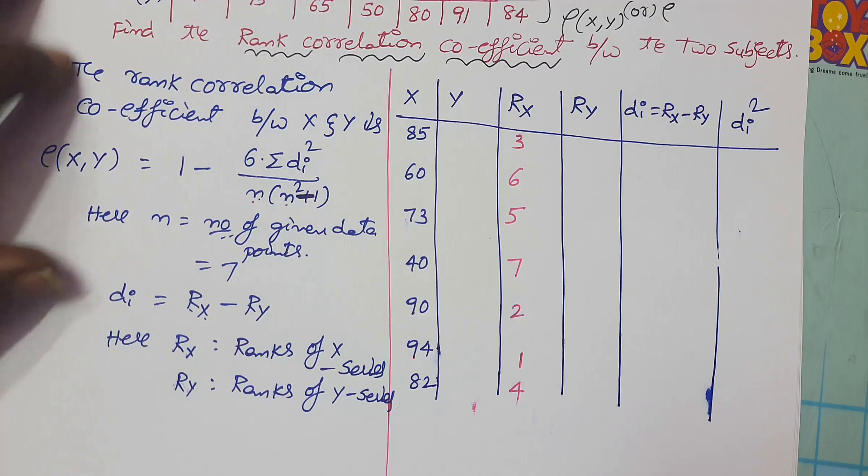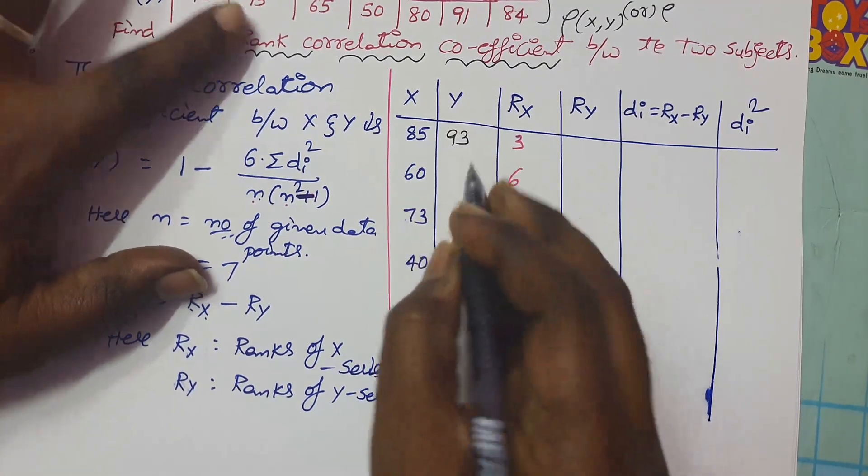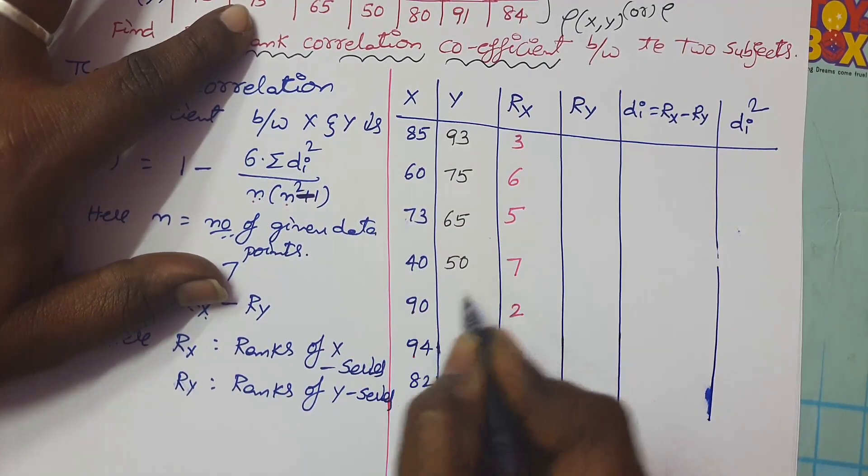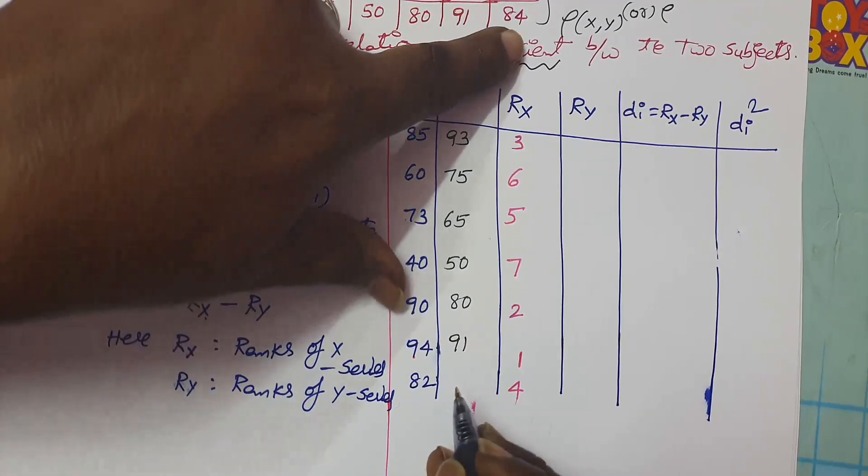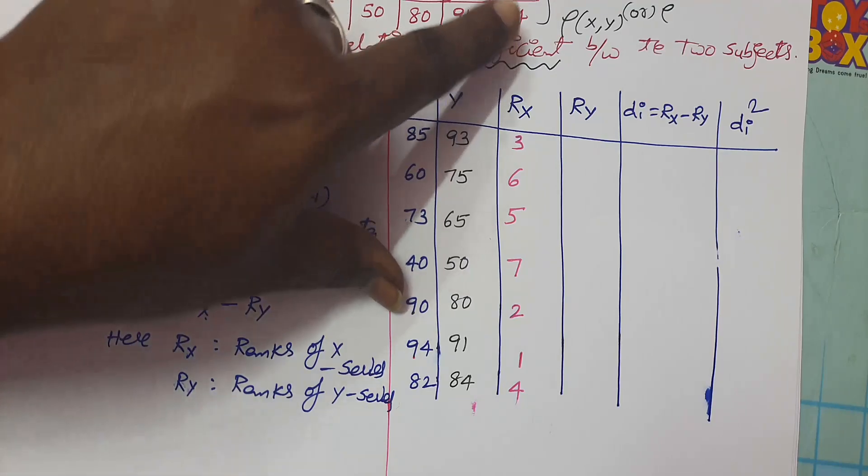Now write the marks in mathematics: 93, 75, 65, 50, 80, 91, 84. Now give the ranks for y series. What is the highest mark? 93 is the highest mark, so give the first rank.